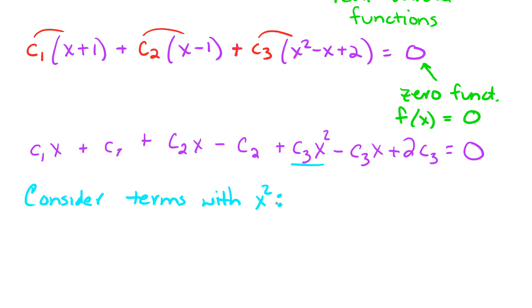Let's consider our quadratic terms. On the left-hand side, we have C3x squared. On the right-hand side, essentially, we have zero x squared. So this tells us that C3 must equal zero.